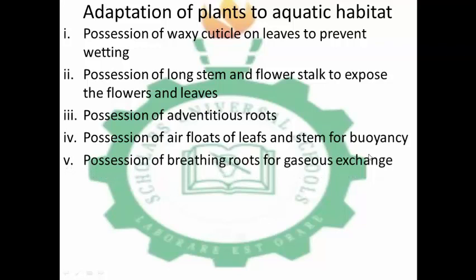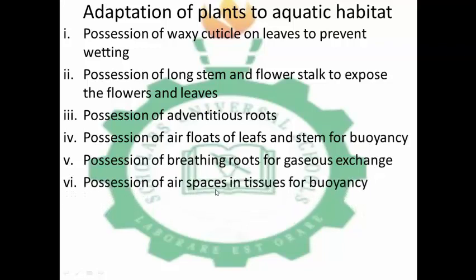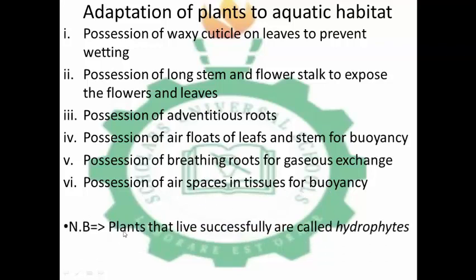Possession of breathing roots for gaseous exchange. These are common in mangrove swamps — they possess breathing roots known as pneumatophores for gaseous exchange. Possession of air spaces in tissues for buoyancy, so air spaces are present in their tissues for them to float on water. Note: plants that live successfully in aquatic habitats are called hydrophytes.